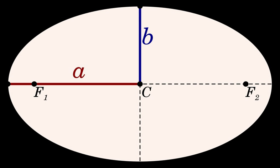The orbiting body's path around the barycenter and its path relative to its primary are both ellipses. The semi-major axis is sometimes used in astronomy as the primary-to-secondary distance when the mass ratio of the primary to the secondary is significantly large. Thus, the orbital parameters of the planets are given in heliocentric terms.